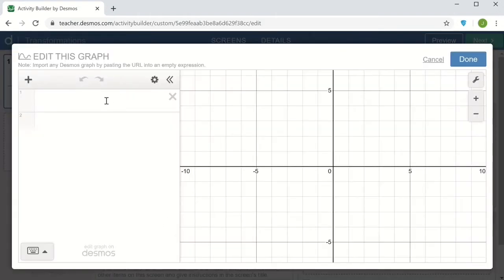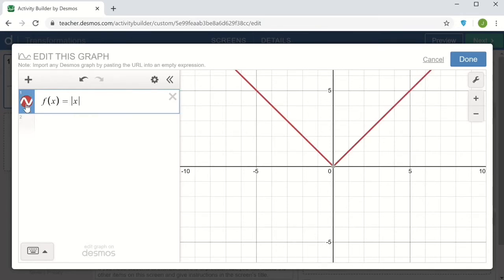Clicking on the graph component, I can enter the function f of x equals the absolute value of x. And I'll turn that into a dotted line. So the student will see that.